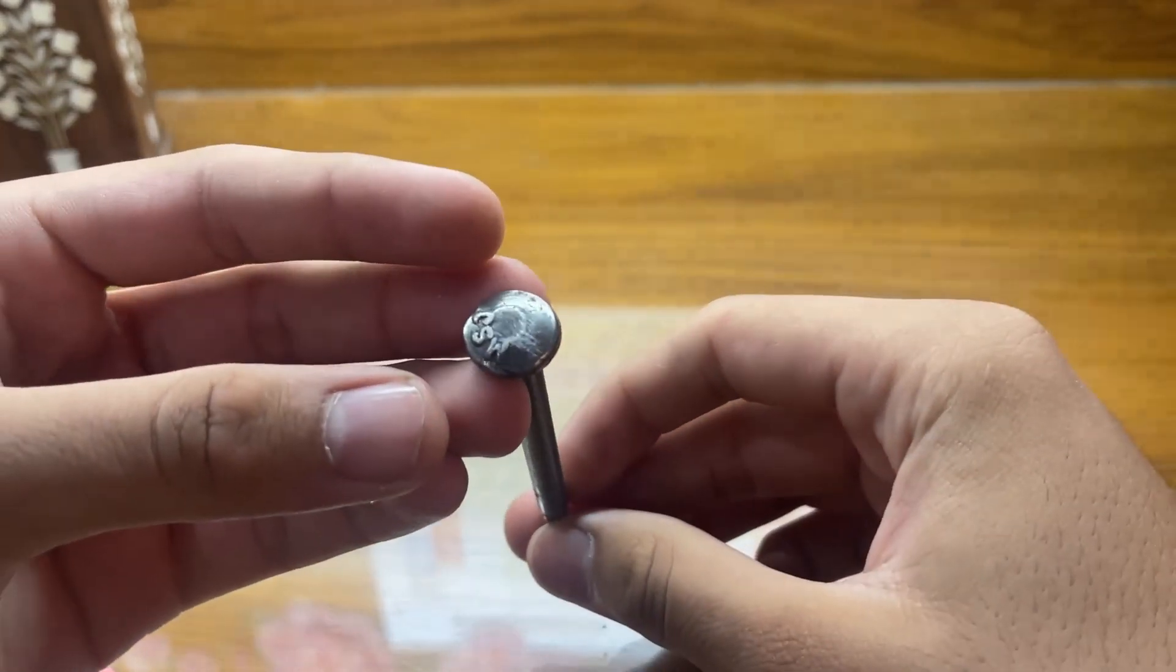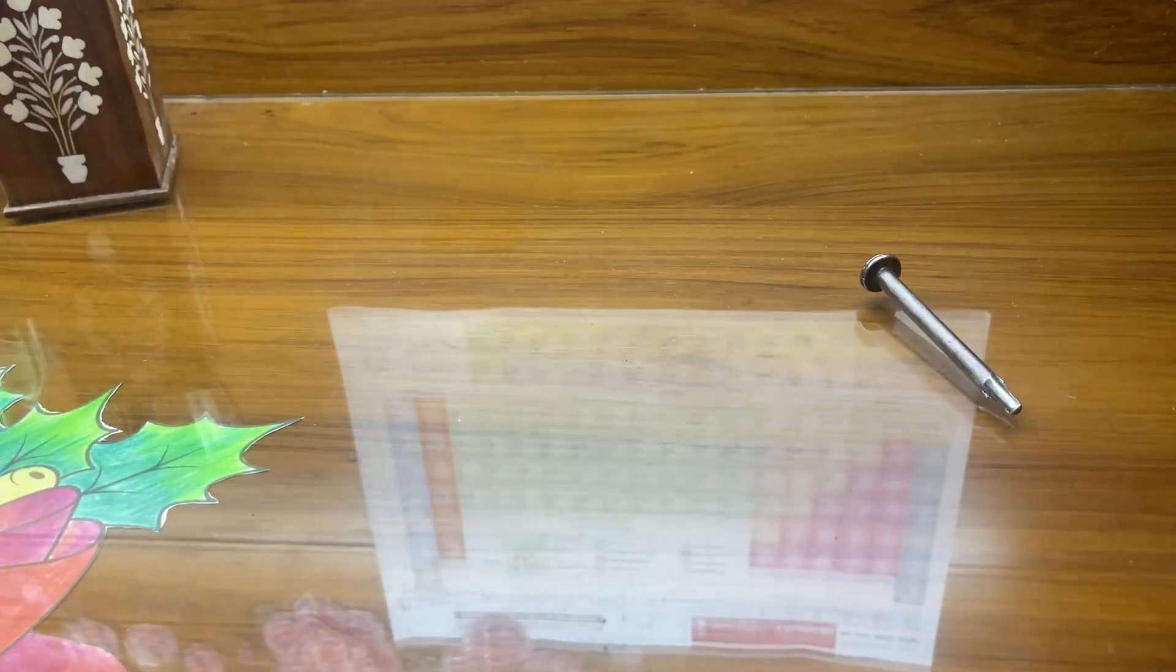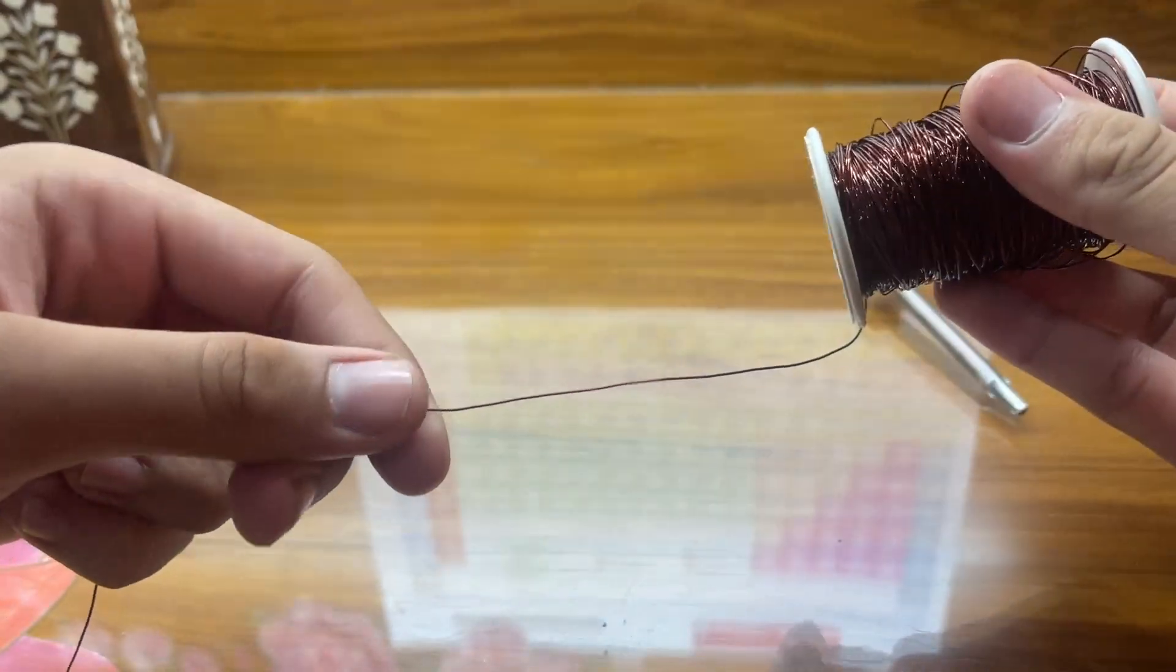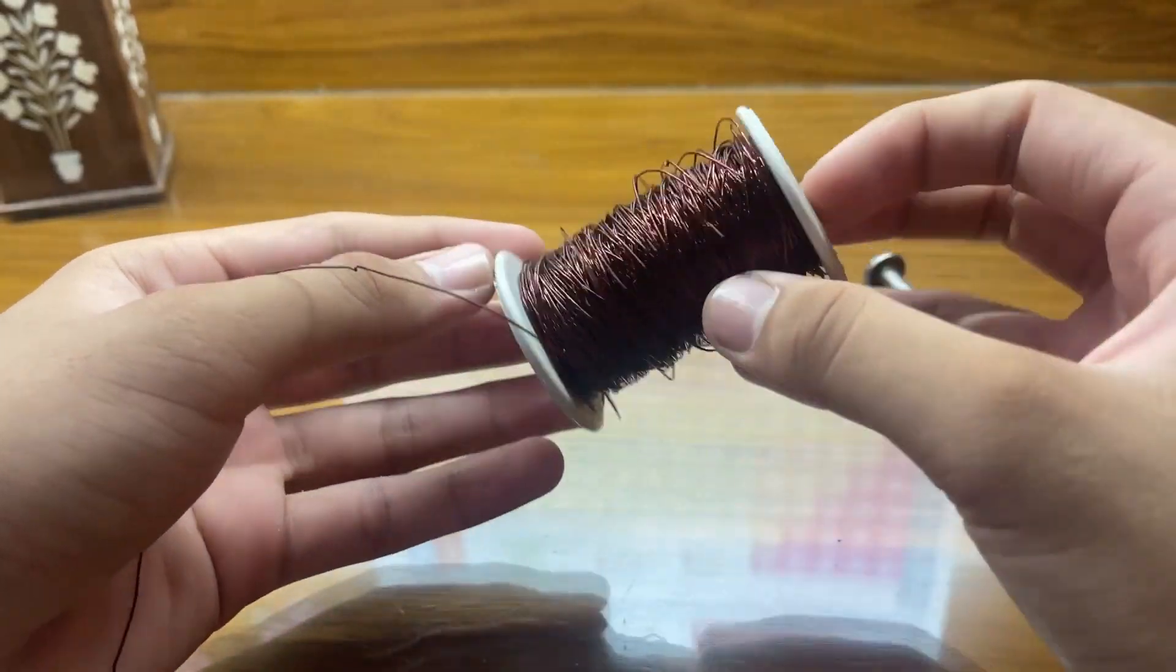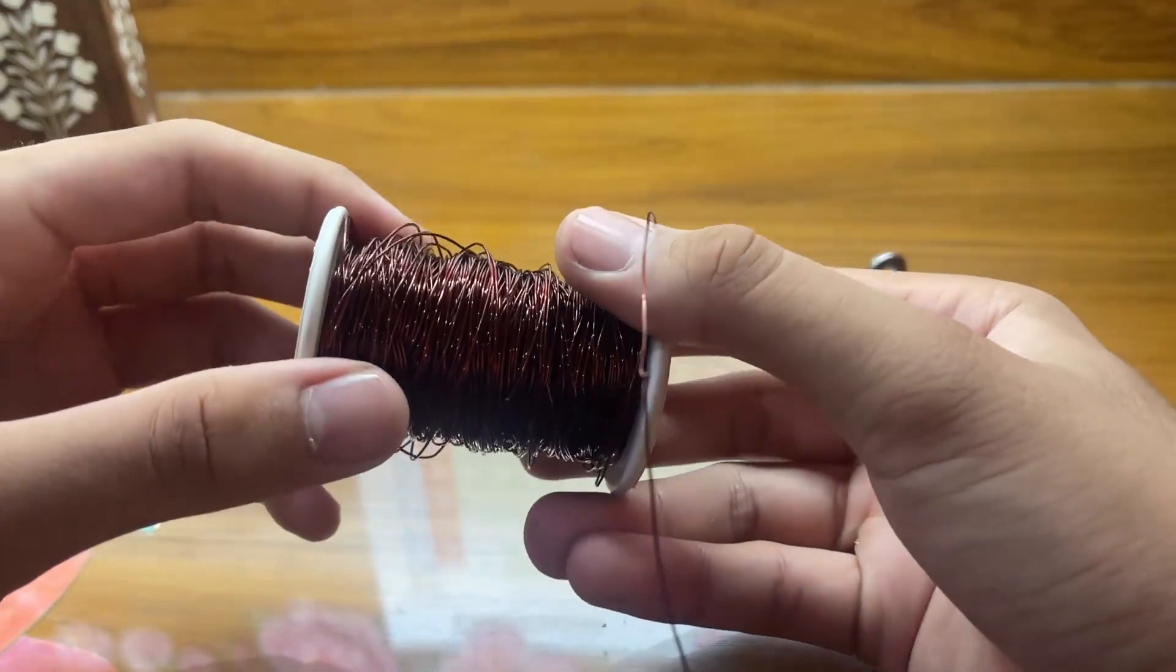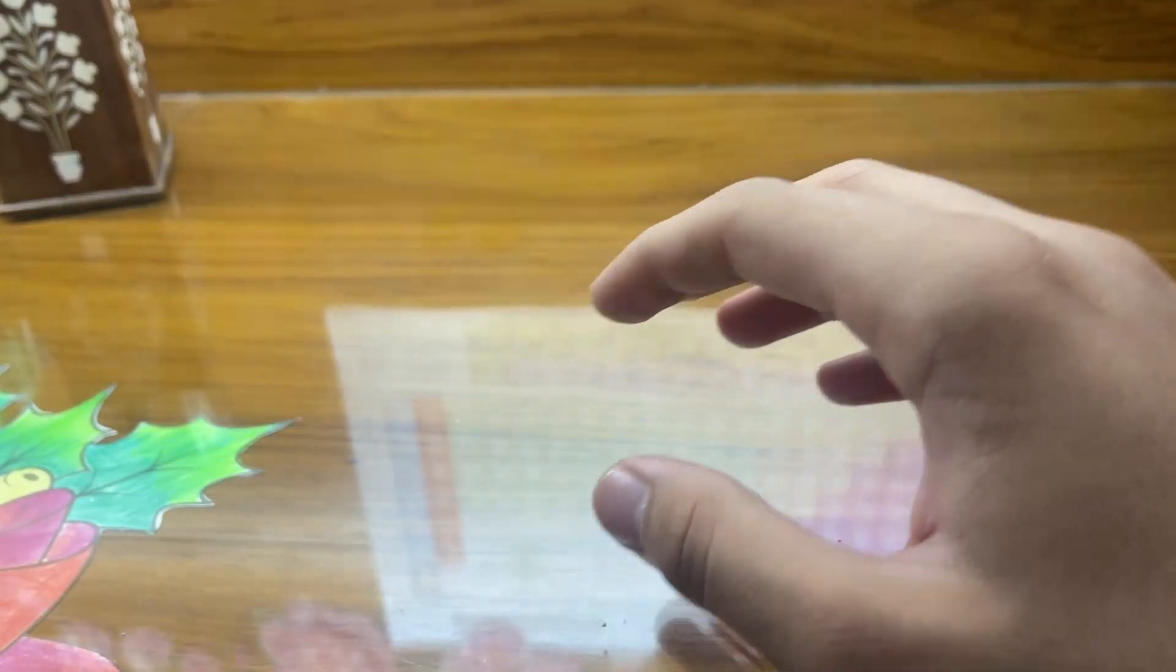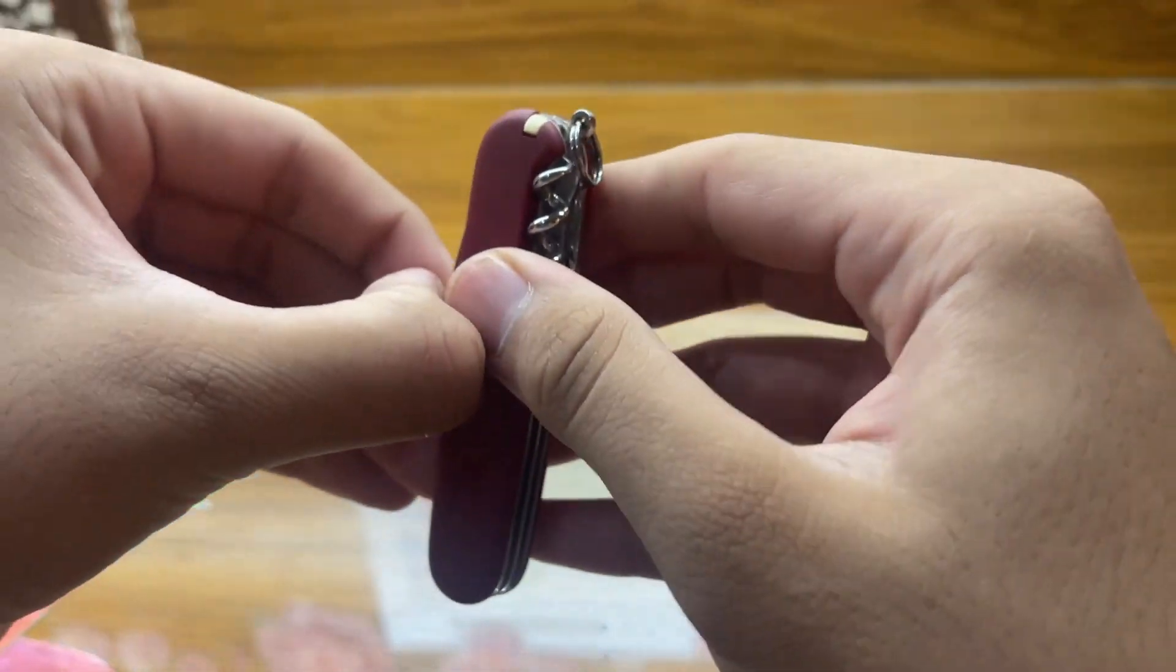For today's project we're going to be using an iron nail - this is a thick iron nail, you can even use a thinner one - a wire cutter, a copper wire. This is an enamel coated copper wire, 25 gauge. You don't need that much copper wire. And a knife to scrape off the enamel coating of the wire.